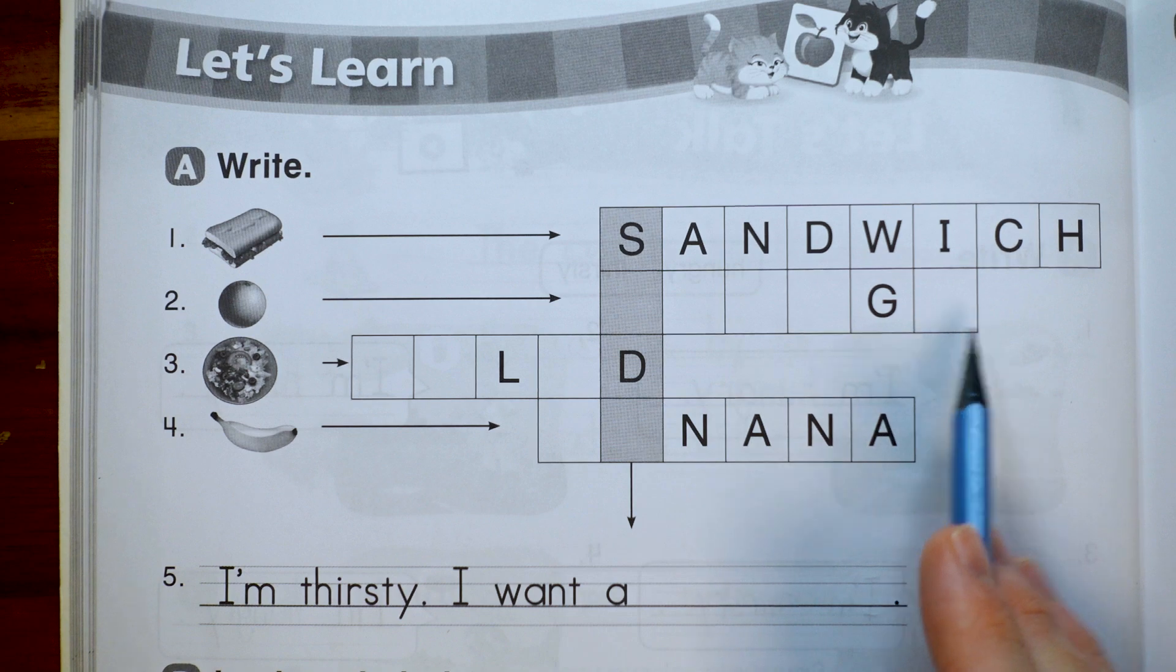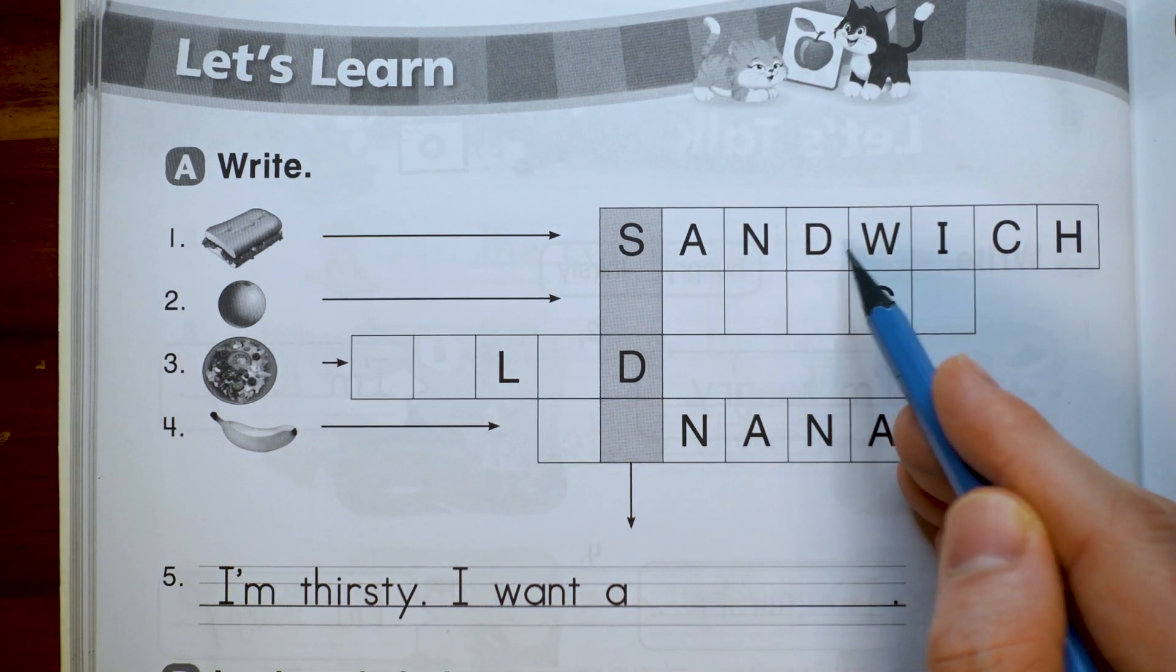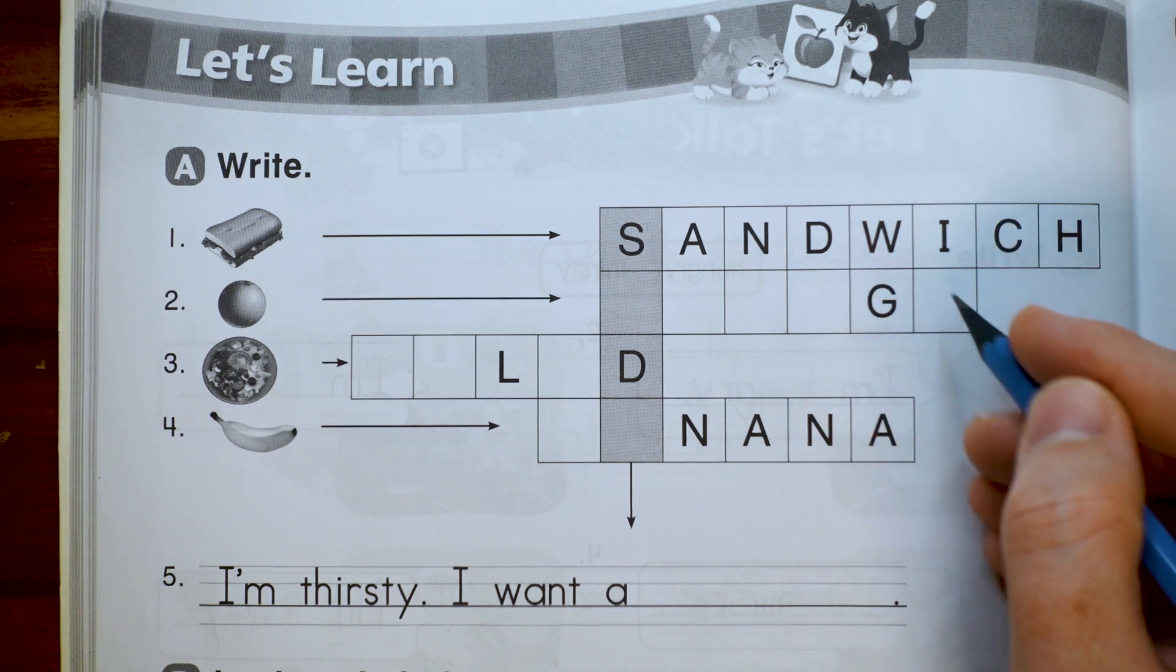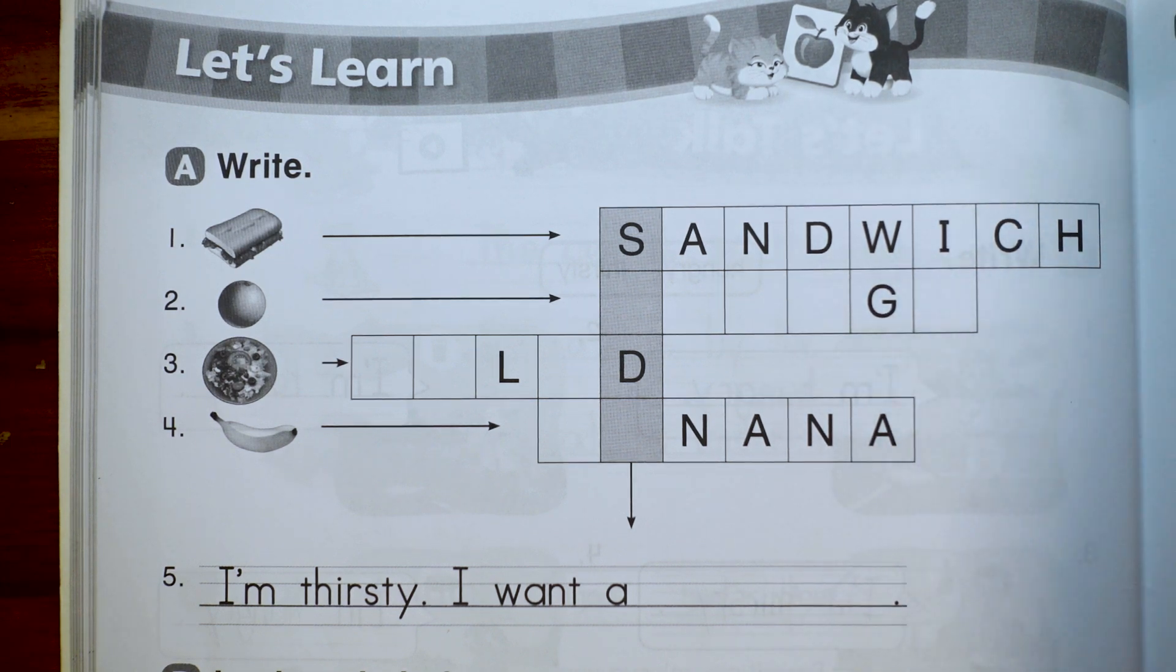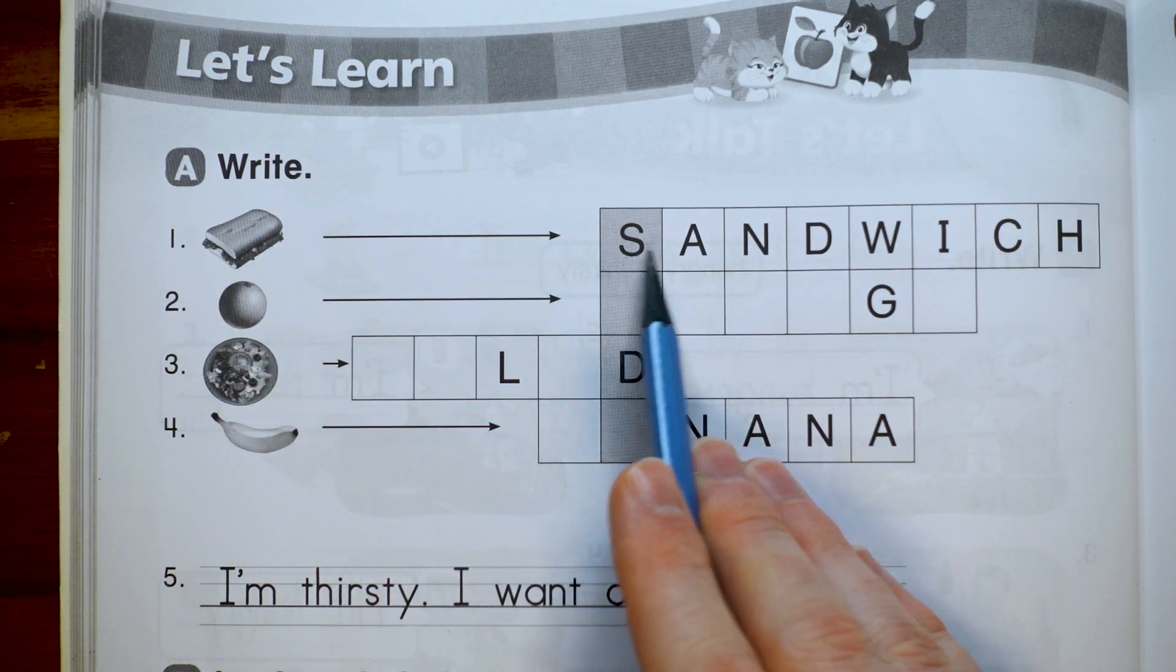So this is kind of like a crossword puzzle. And when I do this, I like to make all the letters big letters, just like this. Then we won't have any letters falling into other boxes. Okay, so number one's done. That is a sandwich.